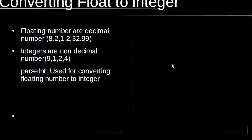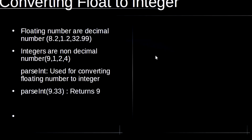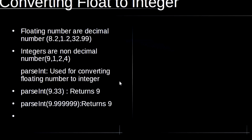We have the parseInt method which is used for converting a floating point number to an integer. In the parentheses we put our floating point number, and when we console or alert this statement we get 9. For example, parseInt(9.999999) also returns 9.